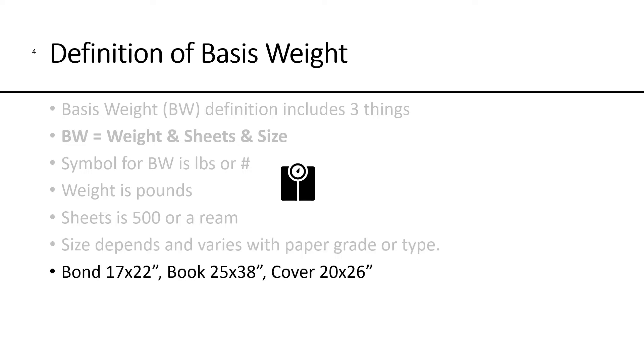Bond papers are 17 by 22, book papers are 25 by 38, and cover papers are 20 by 26. Because the size varies, basis weight can be confusing, which is why we want to use, ultimately, grammage.